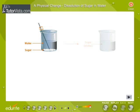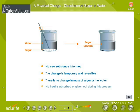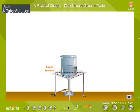Dissolving sugar in water is a physical change because there is no new substance formed. This means that there is no chemical reaction between sugar and water. You get a homogeneous sugar solution.